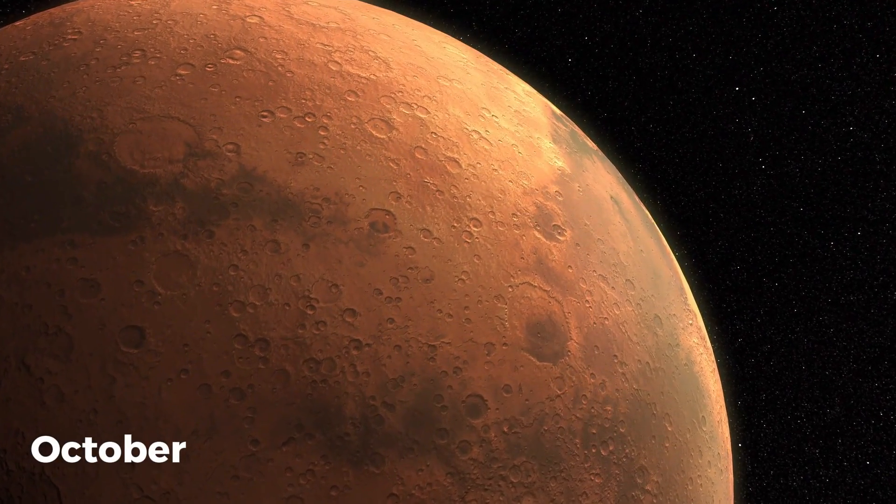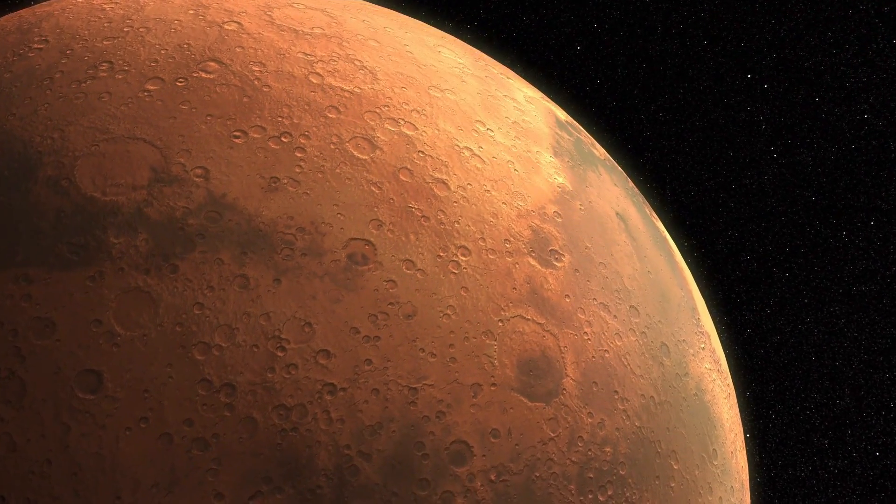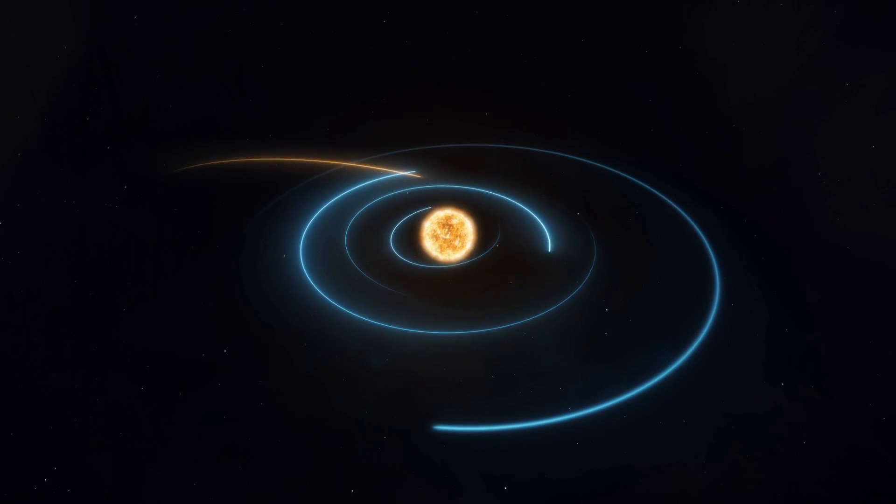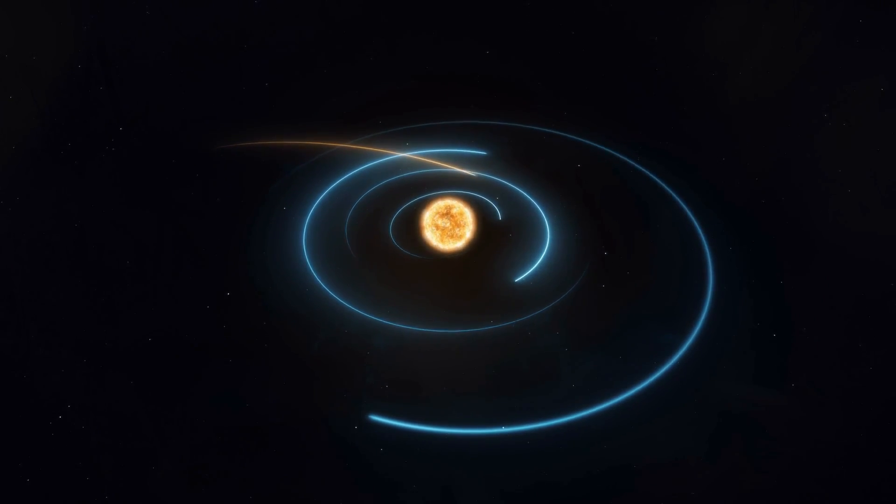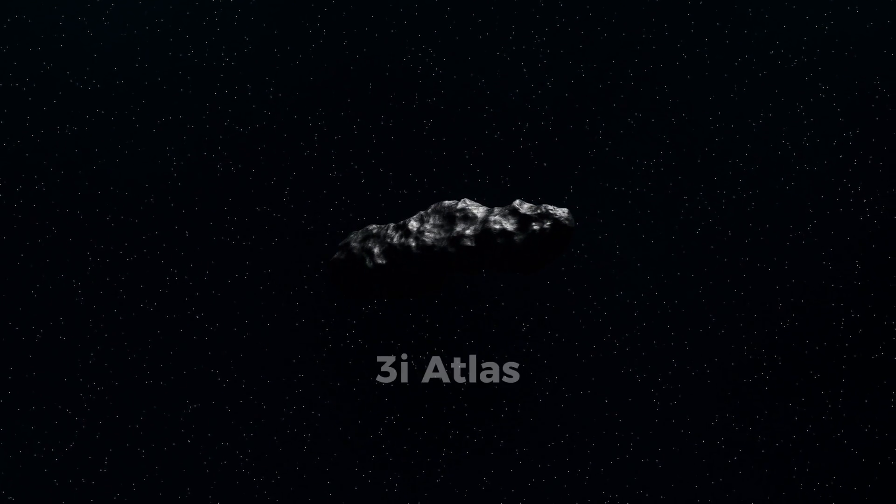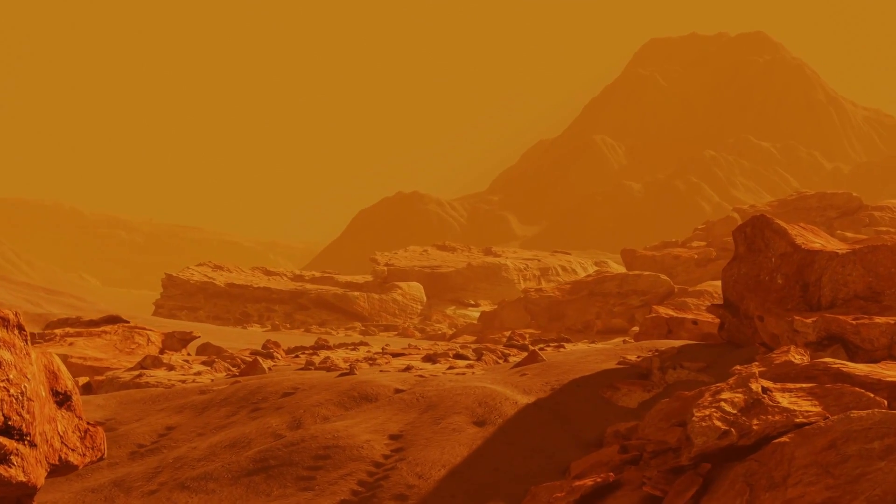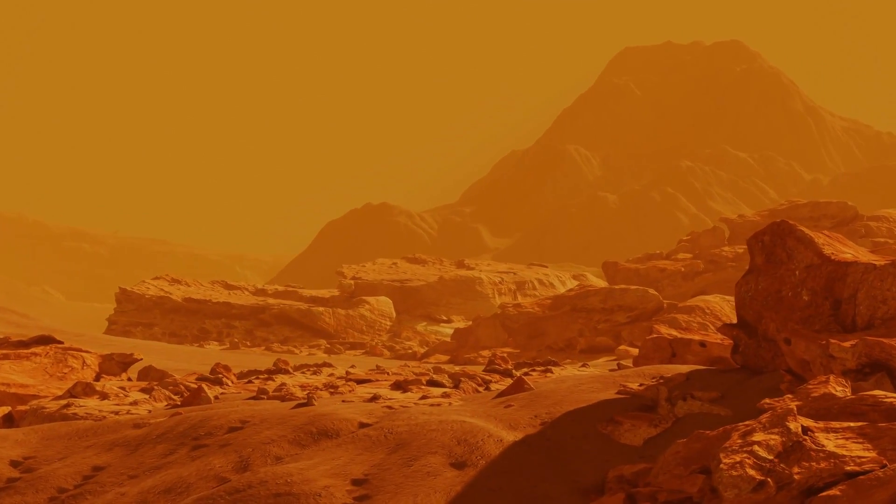In early October, as the red planet drifted through the inner solar system, something strange happened. A newly discovered interstellar object, catalogued as 3i Atlas, made its closest pass by Mars on October 3rd and 4th, brushing through the orbit of the planet at a distance of roughly 30 million kilometers.